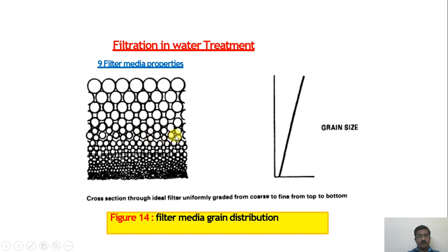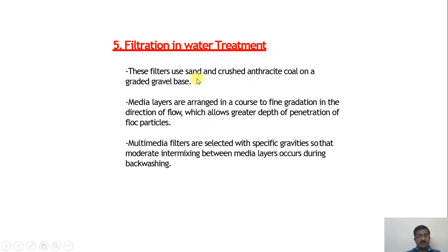Filter media should be well-graded, with uniformly graded coarse-to-fine sand from top to bottom across different layers. The grain distribution of filter media forming various layers helps achieve effective filtration. Media layers use sand, crushed anthracite coal, and gravel, arranged in a coarse-to-fine gradation in the direction of flow, allowing greater depth of penetration of floc particles. Multi-media filters are selected with specific gravity so that moderate intermixing between media layers occurs during backwashing.